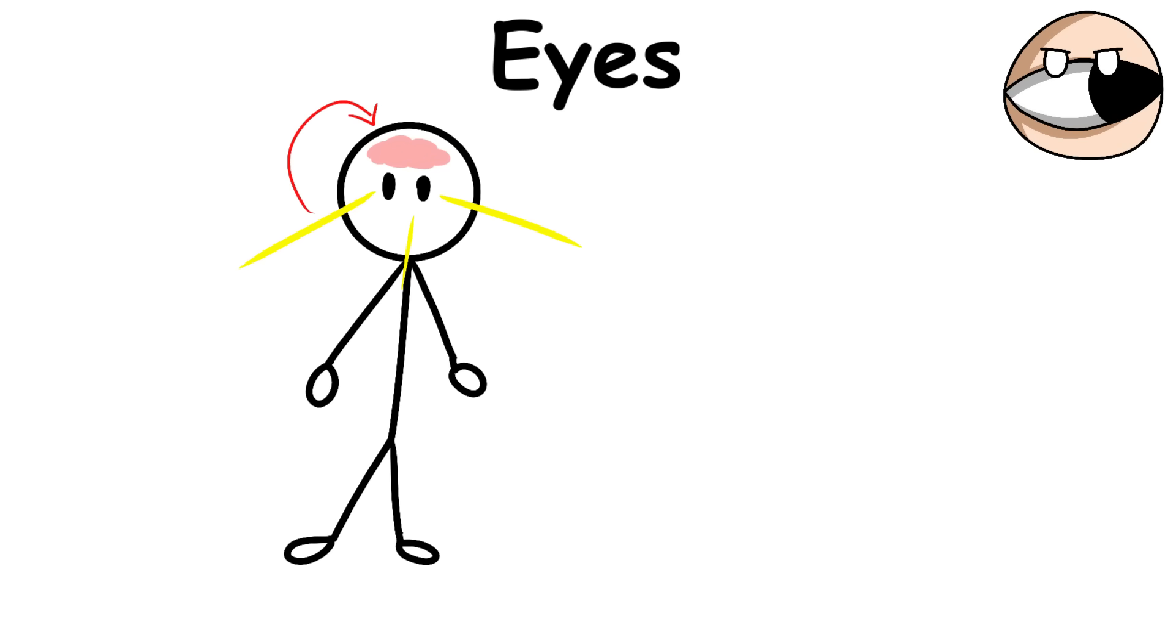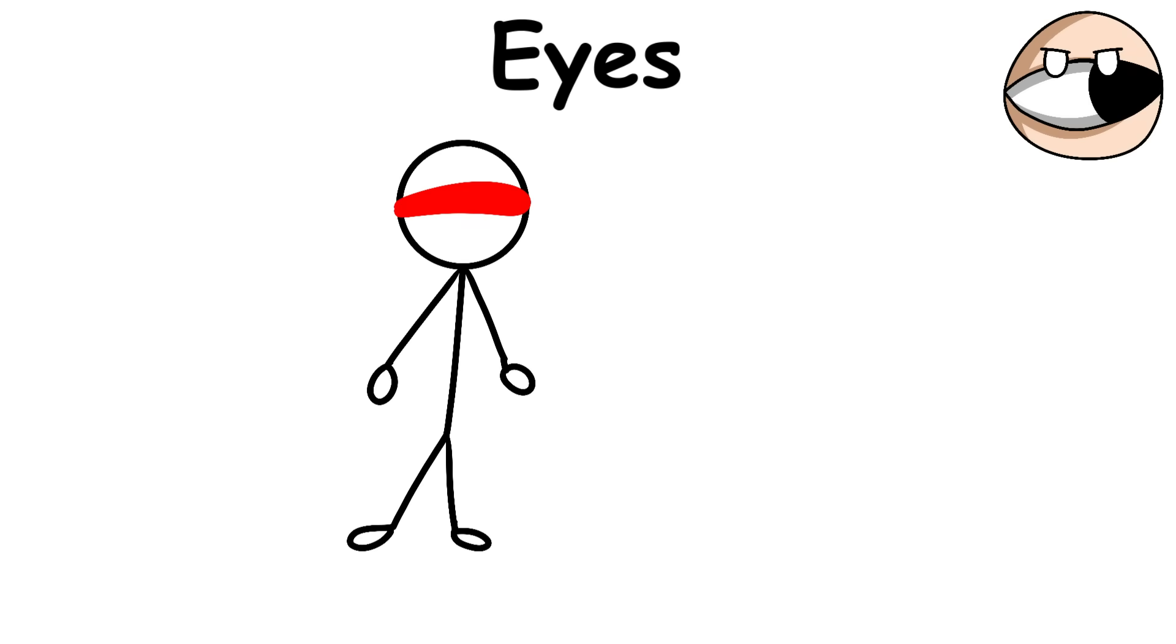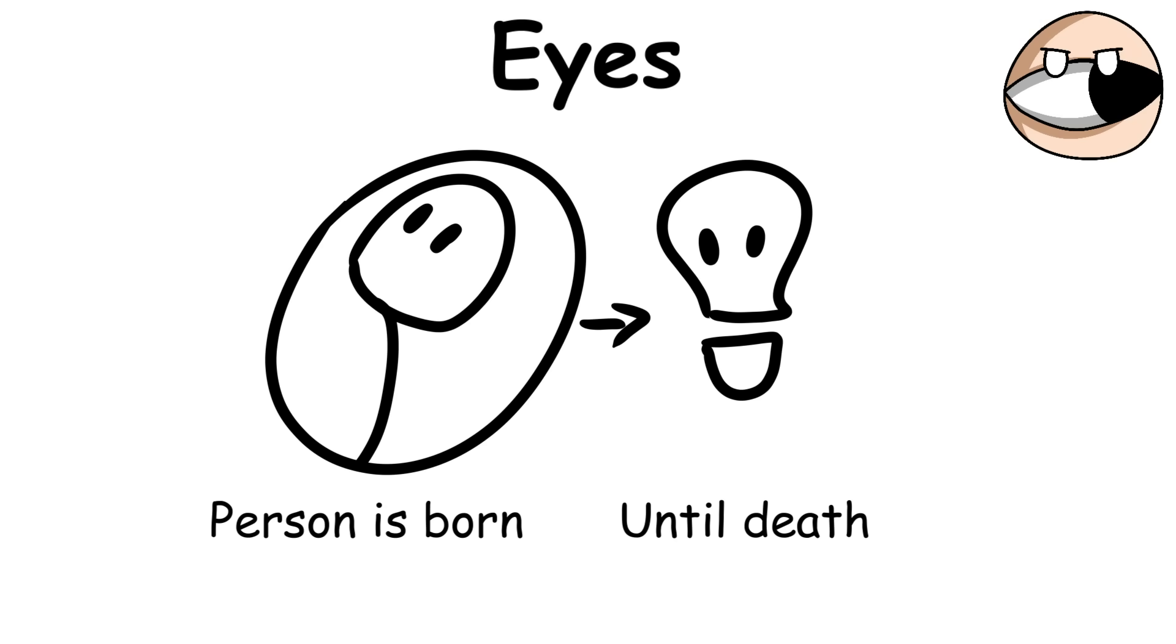This is why the body can't see anything whenever there's little to no visible light available for the eyes to capture. From the day a person is born until death, the eyes remain the same size and will never grow or shrink.